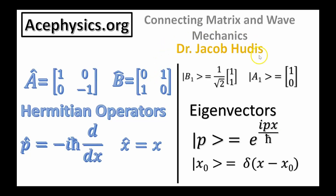Hello, my name is Dr. Jacob Hewdis, and welcome to this short video where I will demonstrate how Heisenberg's matrix mechanics and Schrödinger's wave mechanics are not only conceptually equivalent, but they represent the same underlying physics and mathematics.